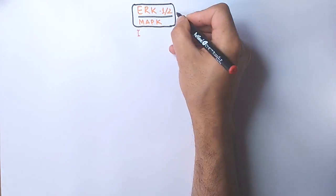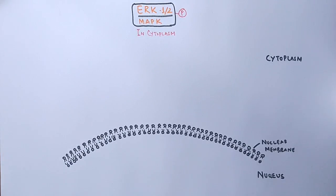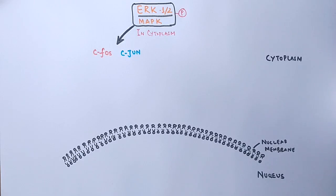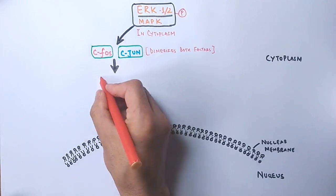It depends upon the type of signal which transcription factor is to be targeted. First of all, let's see the targets in cytoplasm. We see there are two important transcription factors that are acted upon by MAPK molecule: that includes c-Fos and c-Jun. The MAPK dimerizes both these factors, c-Fos plus c-Jun.